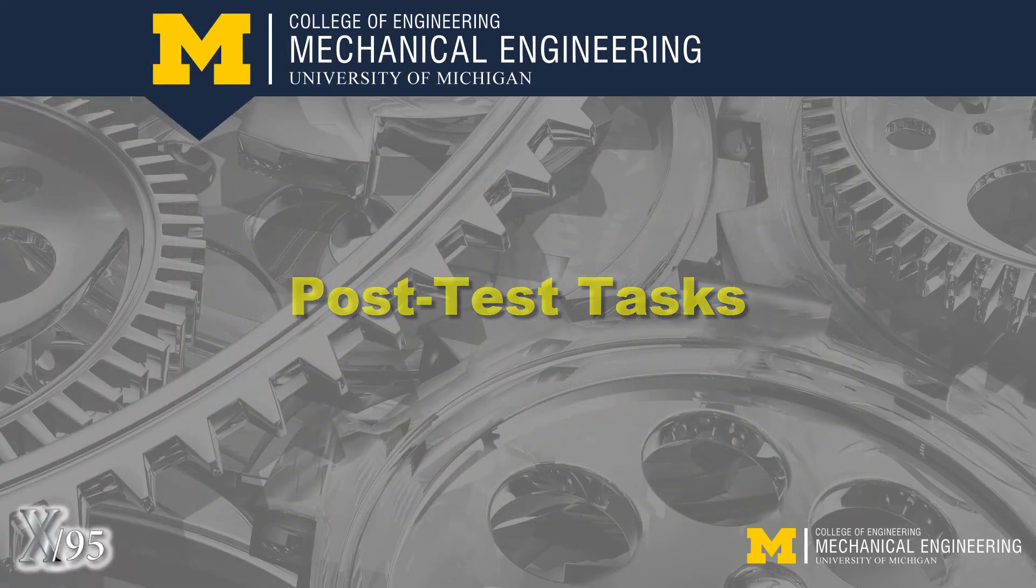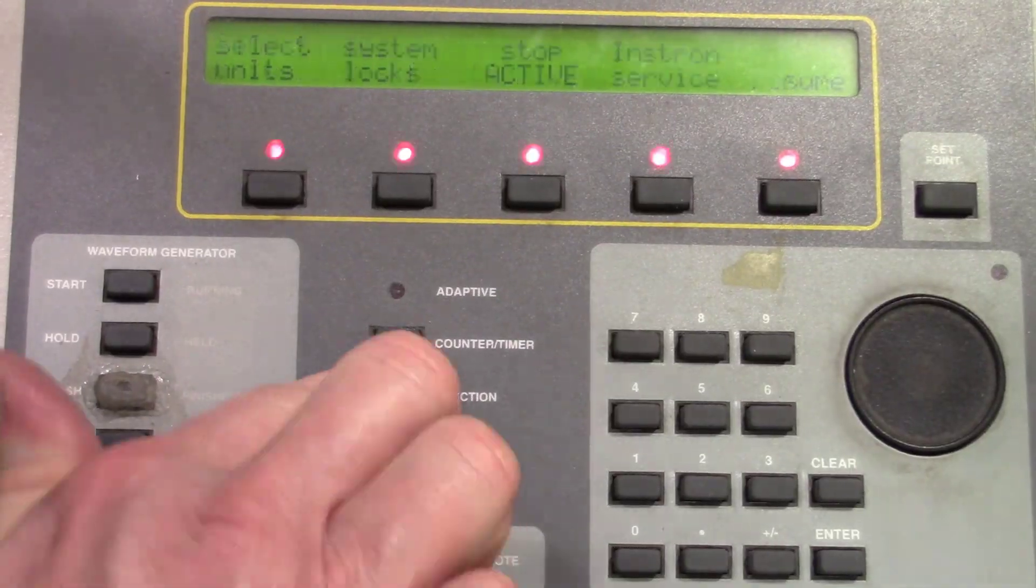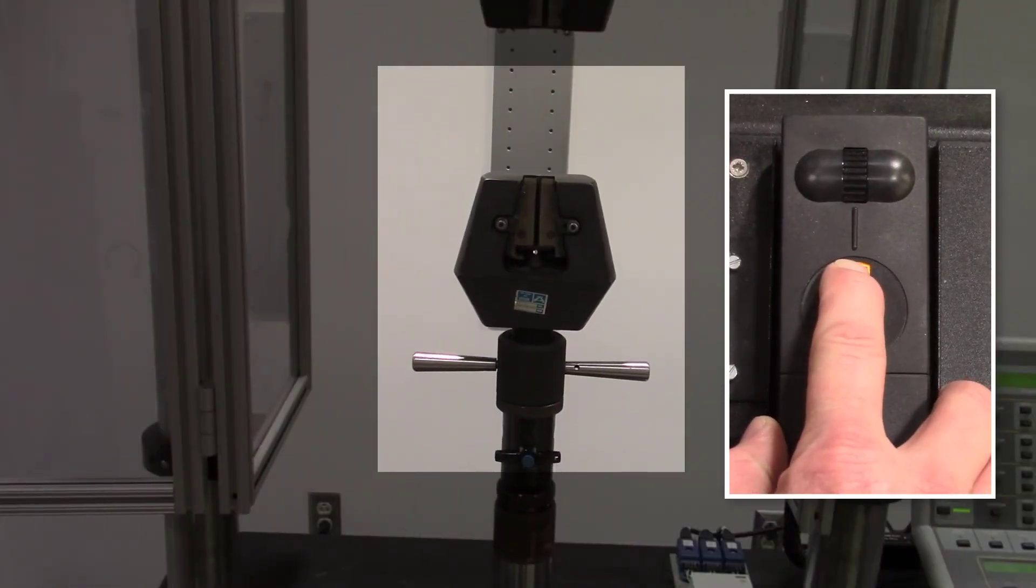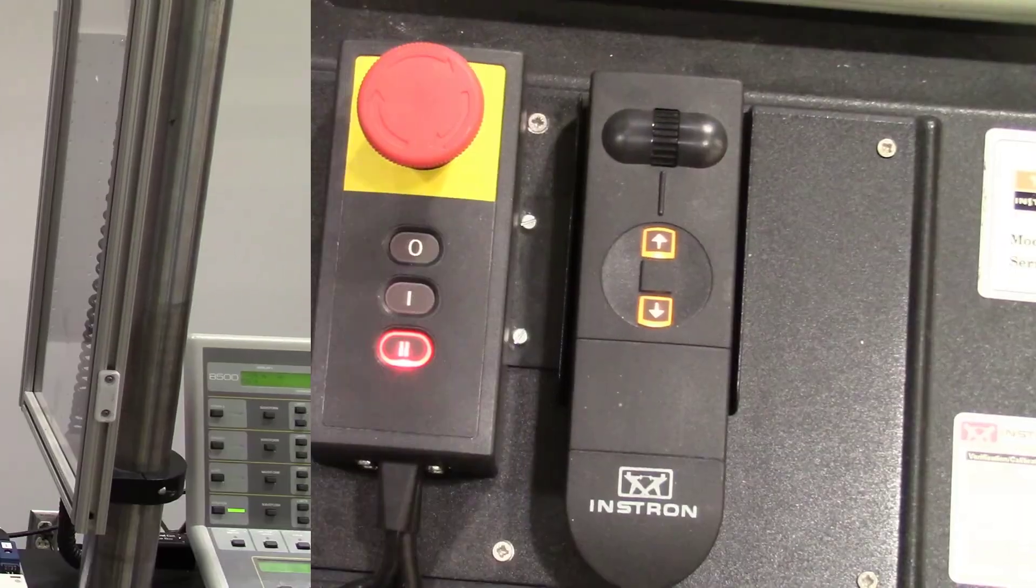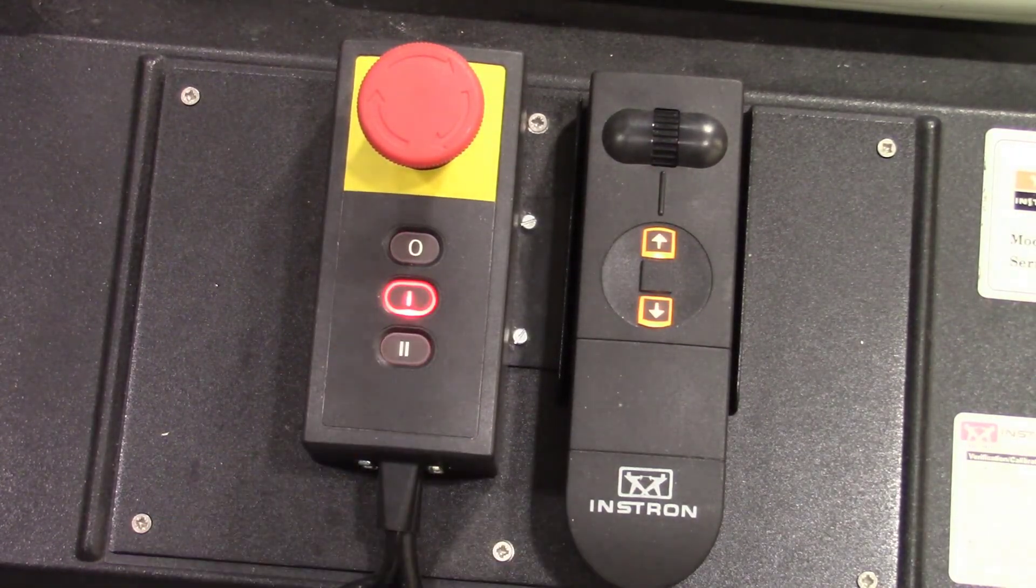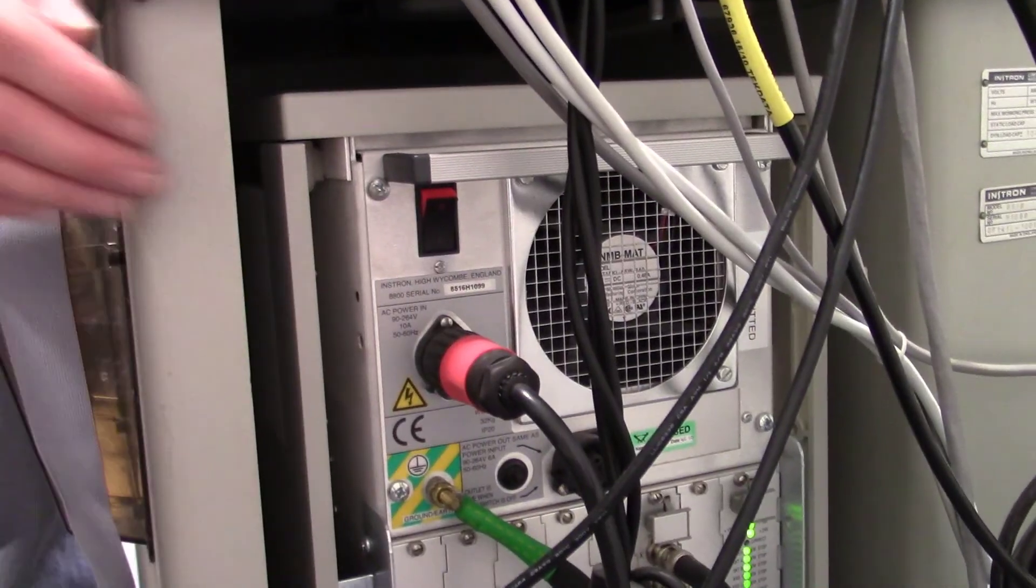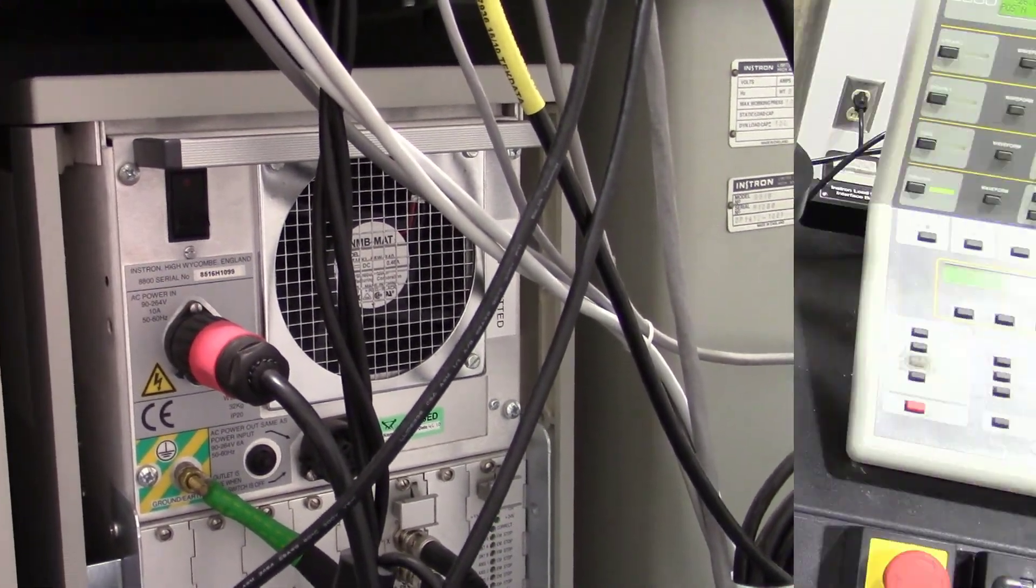Following a stop event, the INSTRON must be reset by pressing FUNCTION, then STOP RESET. Jog the RAM to the start position of negative 40 millimeters. Shut down the hydraulic pump by going to low pressure. Pause a few seconds, then OFF. Shut off the INSTRON if you're the last lab section of the day.